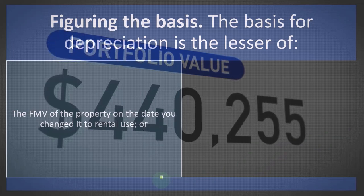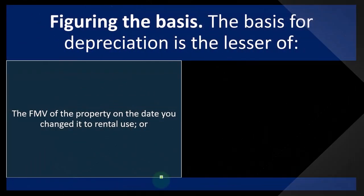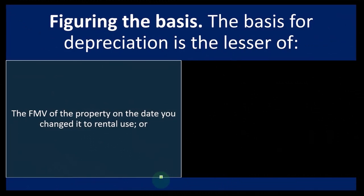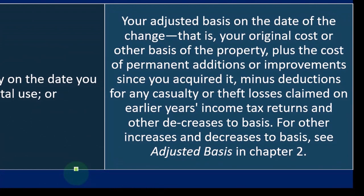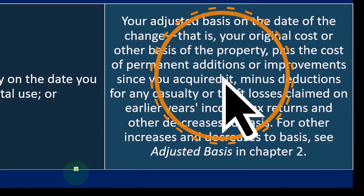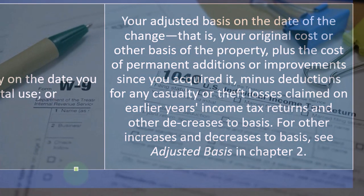The basis for depreciation is the lesser of the fair market value of the property on the date you changed it to rental use, or your adjusted basis on the date of the change. That is your original cost or other basis of the property, plus the cost of permanent additions or improvements since you acquired it, minus deductions for any casualty or theft losses claimed on earlier years' income tax returns, and other decreases to basis.